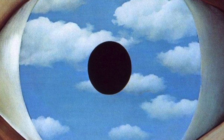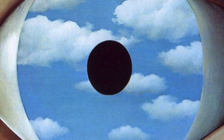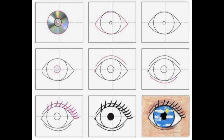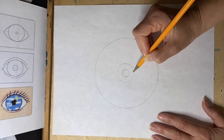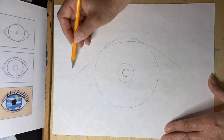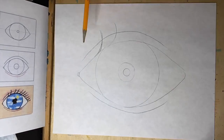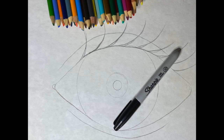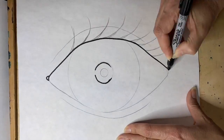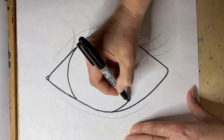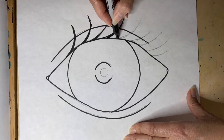This painting will be our inspiration for our project. You can download this image in your assignment. Use a CD, a bowl, or a cup to make your iris. Build around it. When you're drawing your eyelashes, make sure they're coming out of the shape that's touching the iris — see how they go on an angle? Use a Sharpie marker to trace all of your lines.